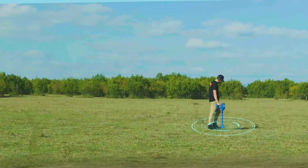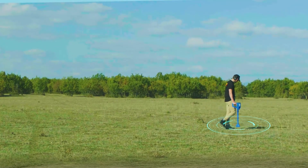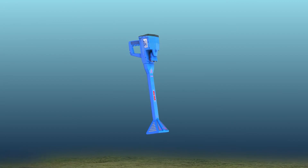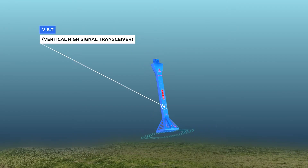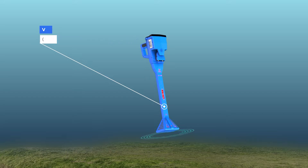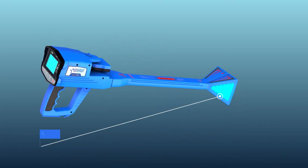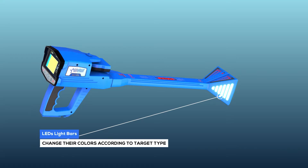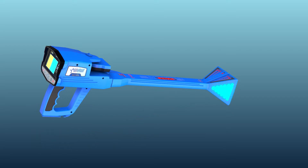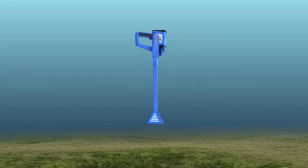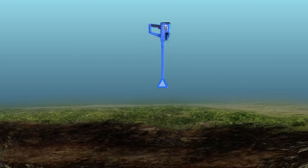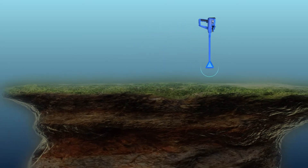The signal measurement and scanning process is performed by the VST (Vertical High Signal Transceiver) unit, which is a probe at the end of which there is a quadrilateral cone on both sides. Bars consisting of many light-emitting diodes (LEDs) change their colors according to the target type. For example, the LED lights will light up in blue when passing over a cavity or space such as a tunnel.